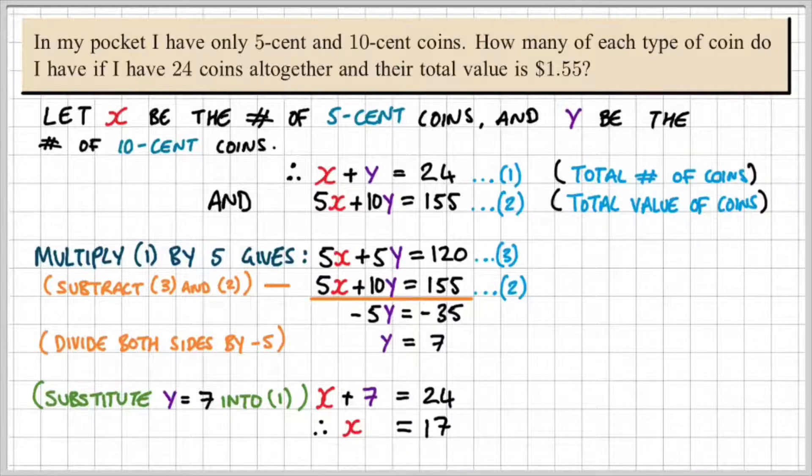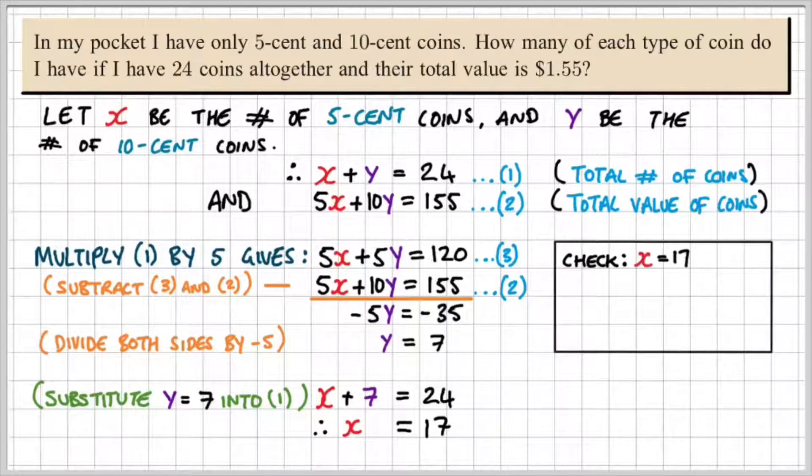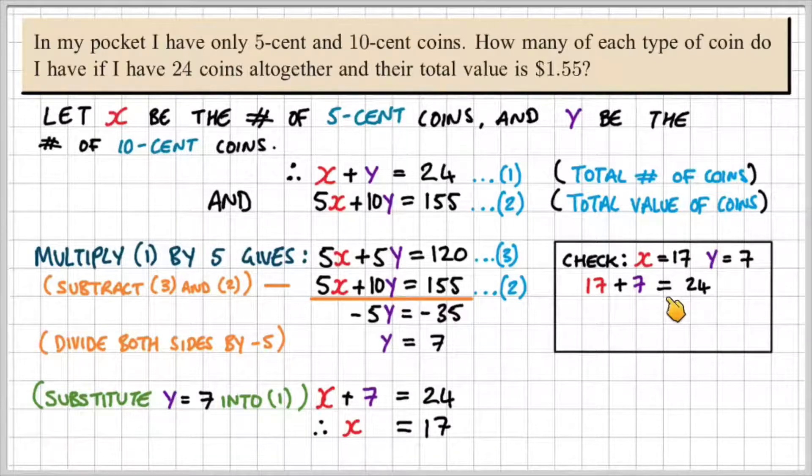Now we're not finished because we need to check to see if both of these solutions work in both equations simultaneously. So let's check that x equals 17 and y equals 7 works for equation 1. If I substitute the values, I would get 17 plus 7 is equal to 24.